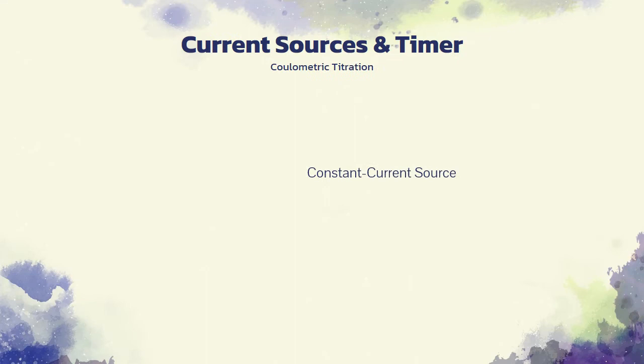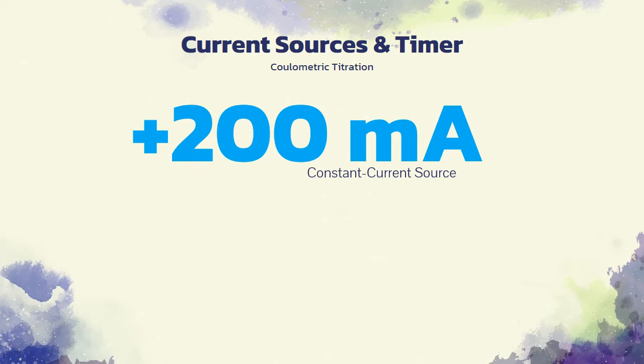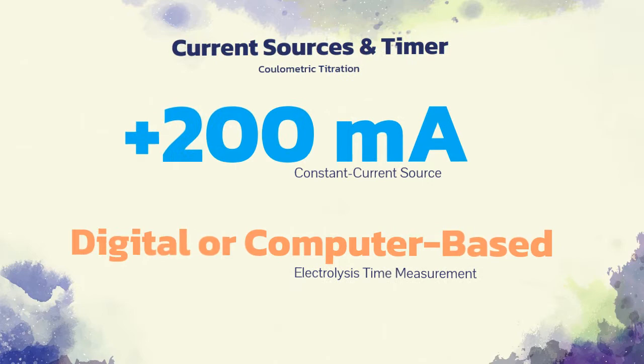The constant current source for a coulometric titration is an electronic device capable of maintaining a current of 200 mA or more that is constant to a few hundredths percent. Such constant current sources are available from several instrument manufacturers. The electrolysis time can be measured very accurately with a digital timer or a computer-based timing system.